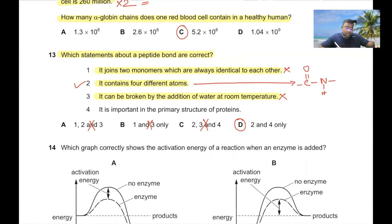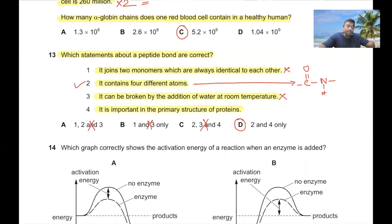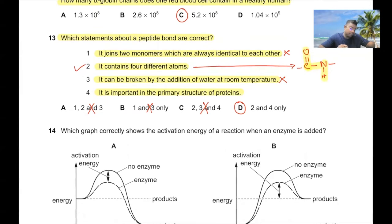The fourth statement — it is important in the primary structure of protein — is correct. The C-O-N-H peptide bond is very important in the primary structure.